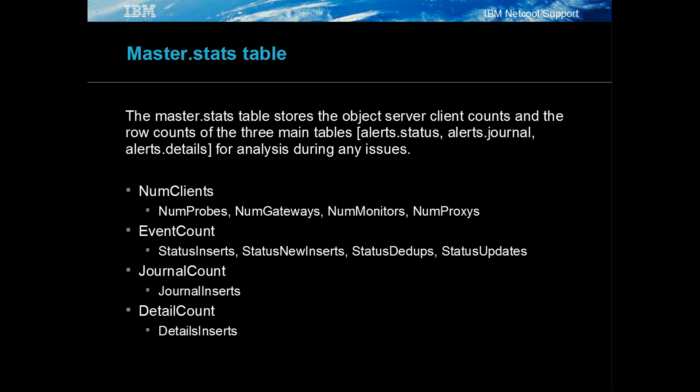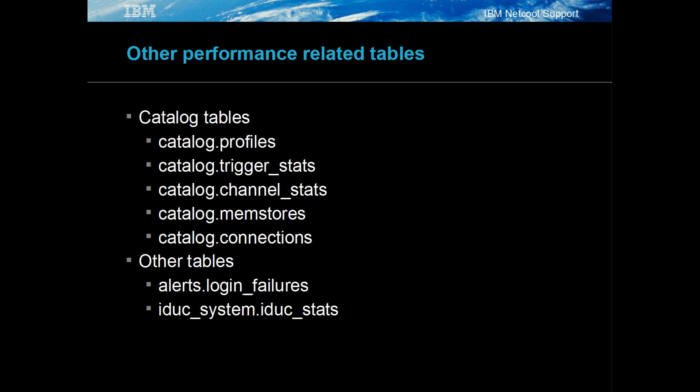The master.stats table includes row counts for the three main dynamic tables, as well as the total number of connected clients. It is useful for spotting trends and abnormal usage. The catalog database has other performance-related tables, including those used by the trigger statistics and the profiler log.